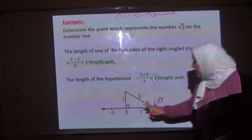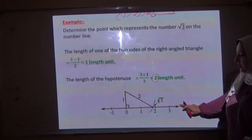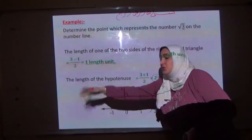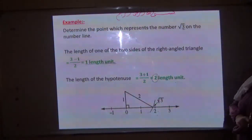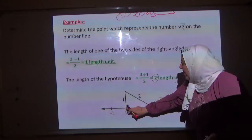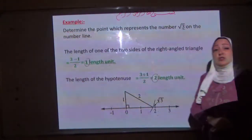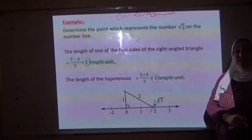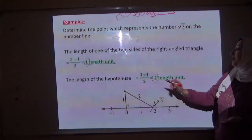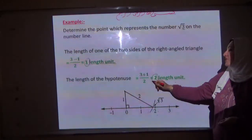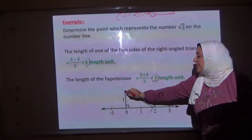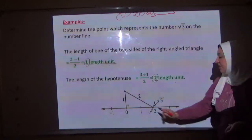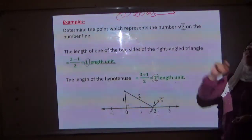We can draw it directly on the number line using a ruler. Draw the number line: 0, 1, 2, 3 in the positive direction; negative 1, negative 2, and so on in the negative direction. Stop at 0 and draw one length unit for the side. At the end of this side, open your compass to a length of 2 cm. Draw an arc to cut the number line at the point which represents square root 3.